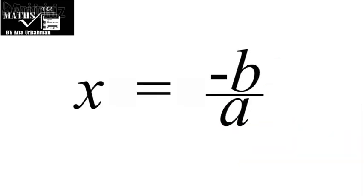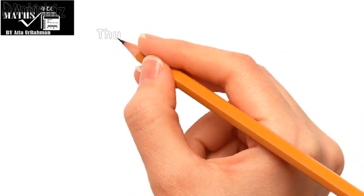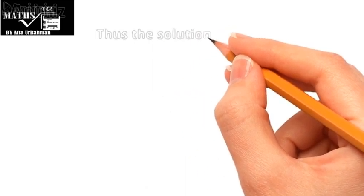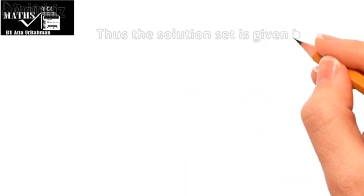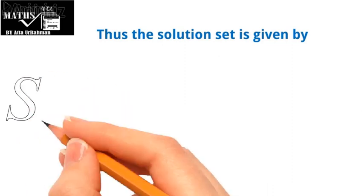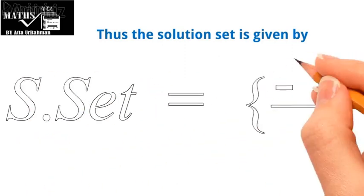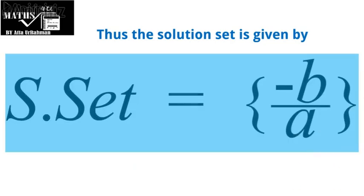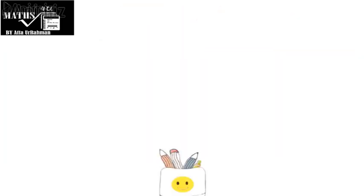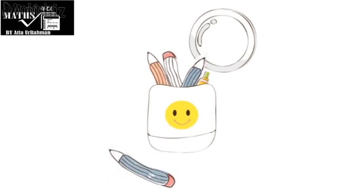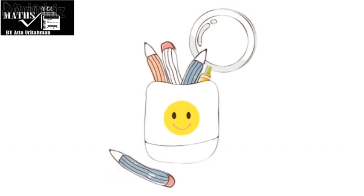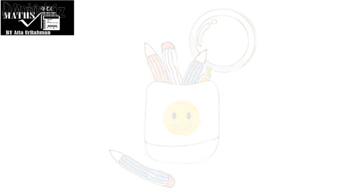Now the final step is to put this solution — this root of the equation — into the solution set of the linear equation. That is, we tabulate this value of x, that is minus b by a, in the brackets, which gives the solution set of the linear equation. Hope you understand the procedure. So next let us try some problems on it.